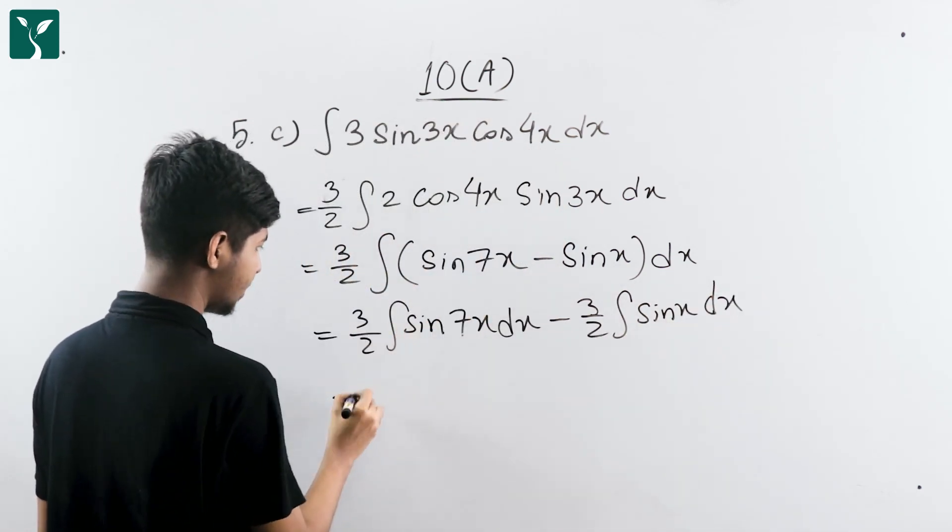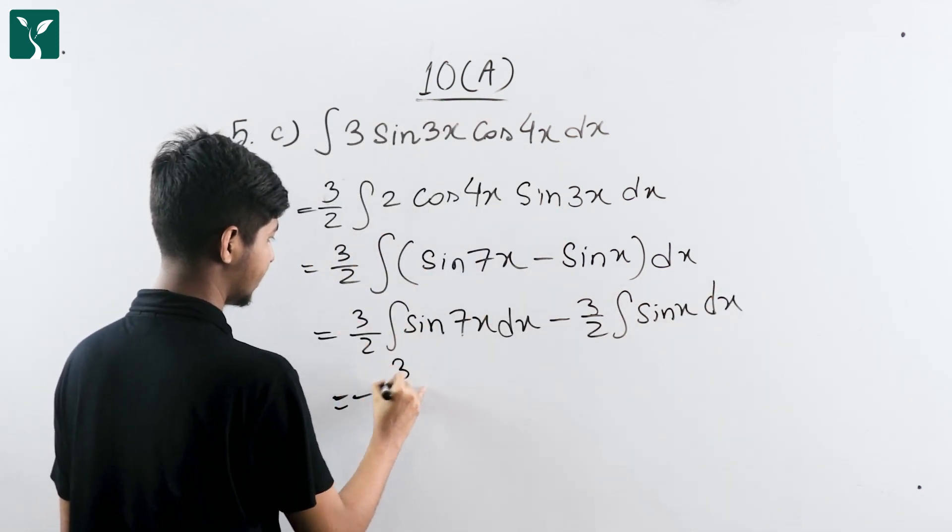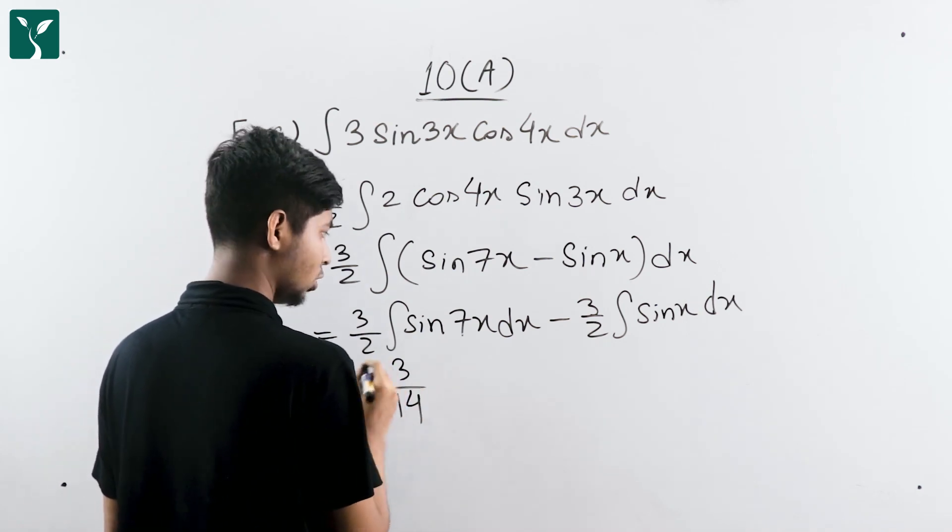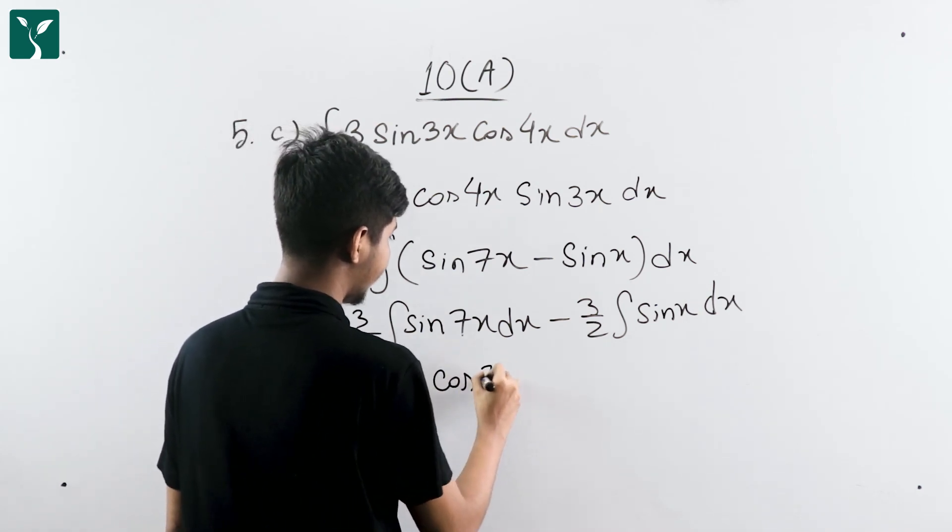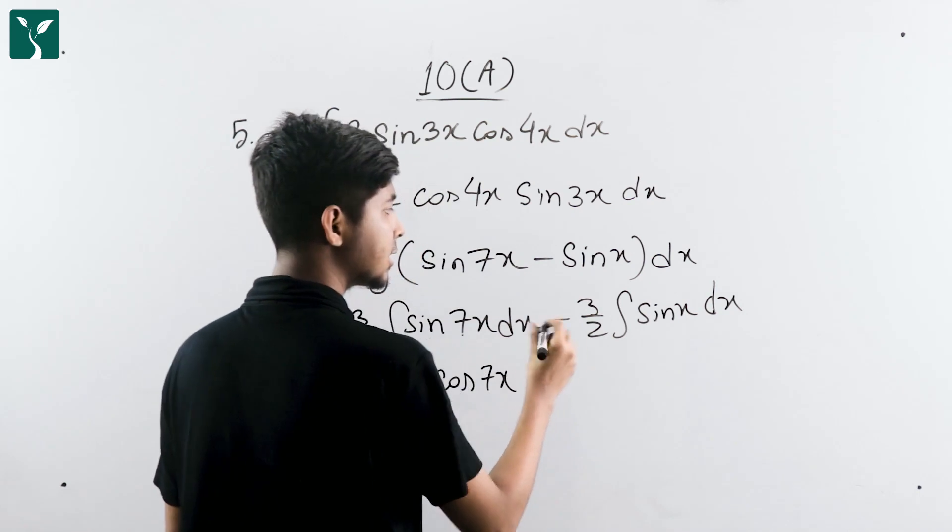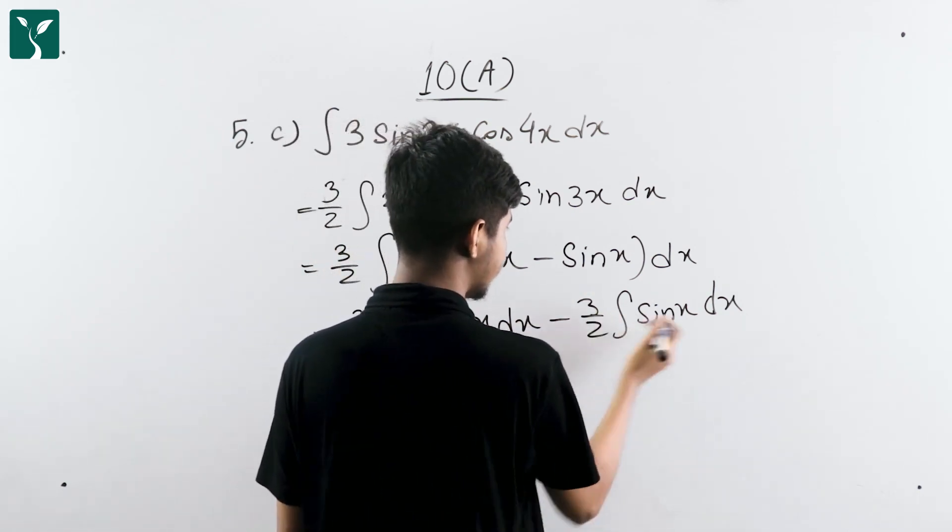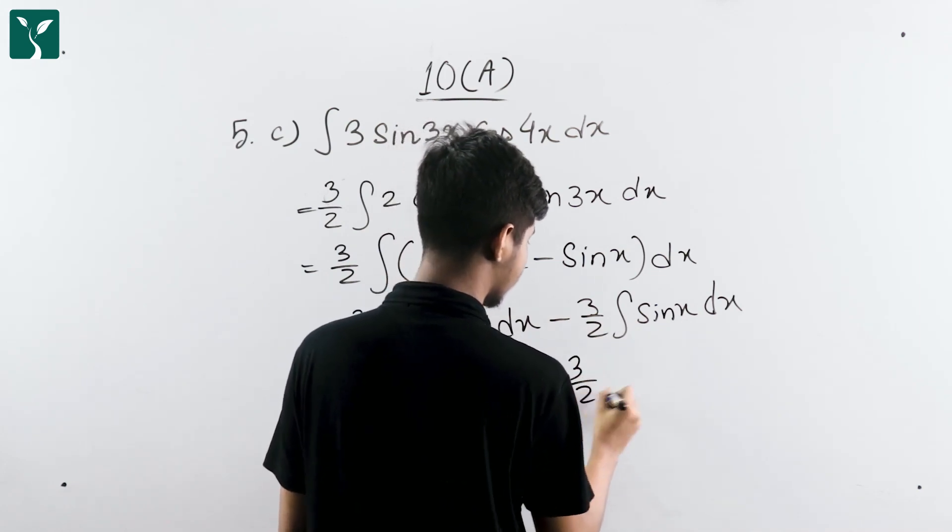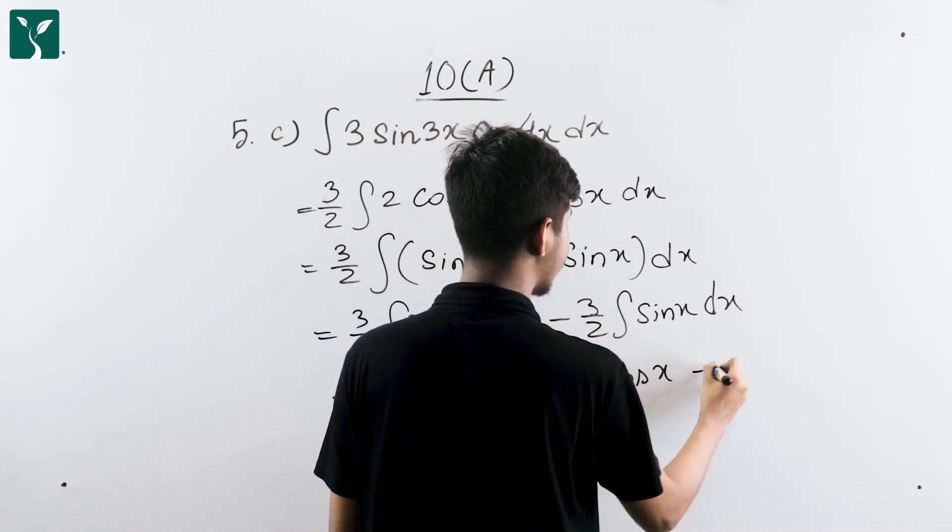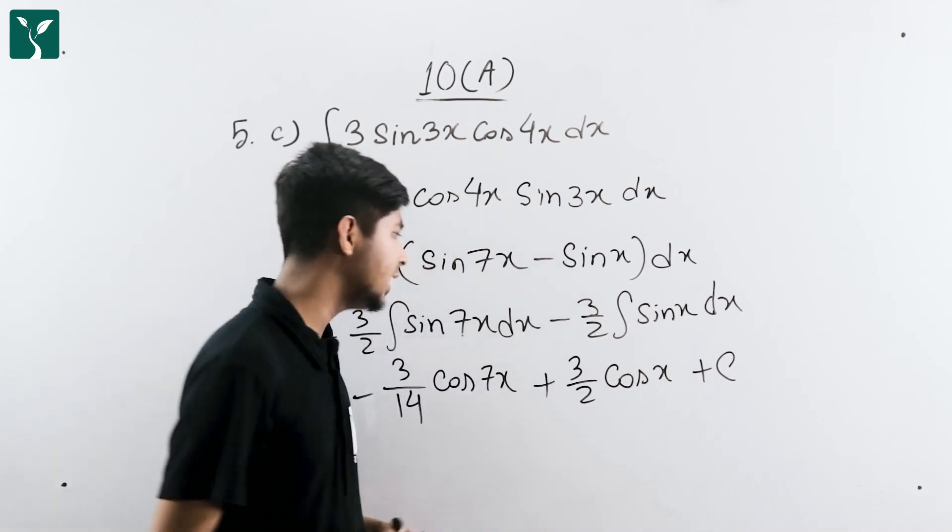Integrating these terms, we get minus three by two times one over seven cos 7x, which simplifies to minus three over fourteen cos 7x, plus three by two cos x plus C.